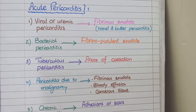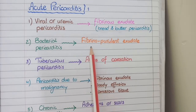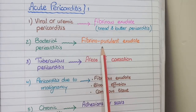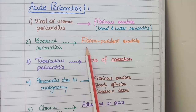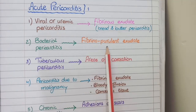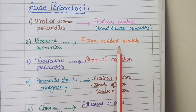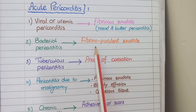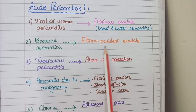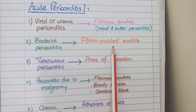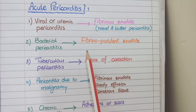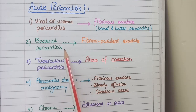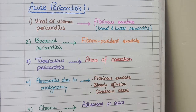In cases of bacterial infection, along with fibrinous exudate, you will find pus in the pericardium. This is called fibrinopurulent exudate — fibrino meaning fibrinous exudate and purulent meaning pus. Fibrinopurulent exudate is found in bacterial pericarditis.